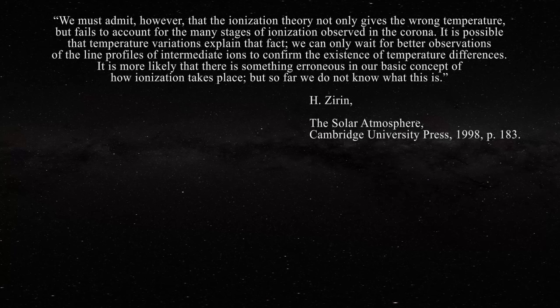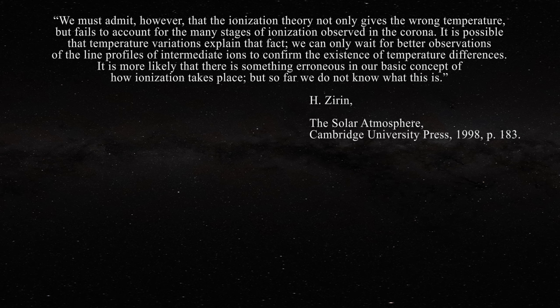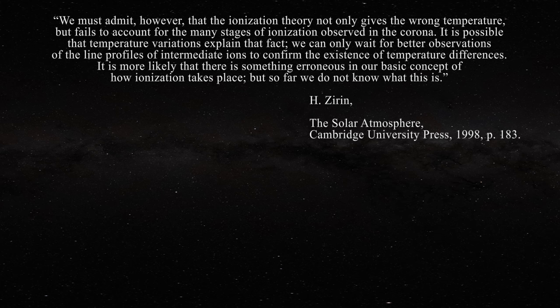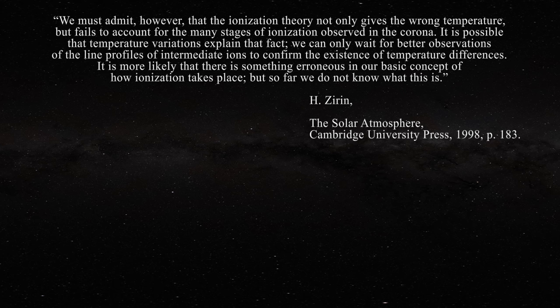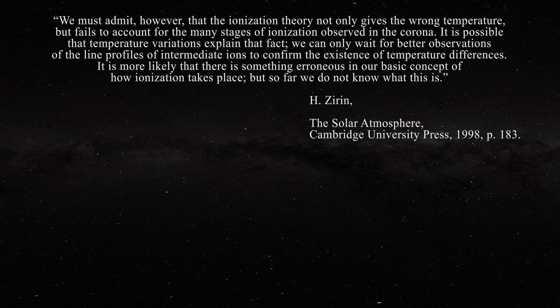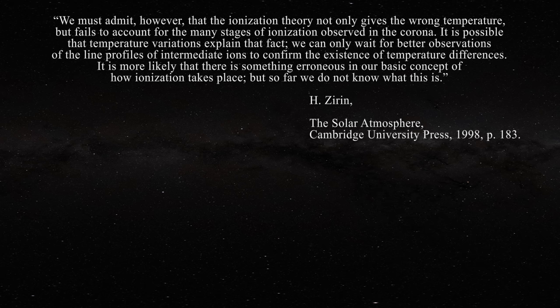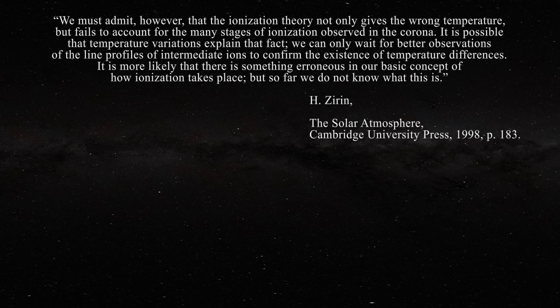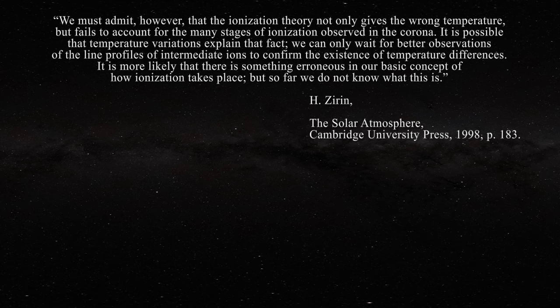Zirin wrote: 'We must admit that the ionization theory not only gives the wrong temperature but fails to account for many stages of ionization observed in the corona. It is more likely that there is something erroneous in our basic concept of how ionization takes place, but so far we do not know what this is.' What Zirin was unknowingly looking for was chemistry — this is what solar physicists with their ideas of random temperature ionizations have missed.